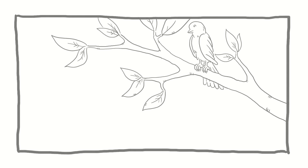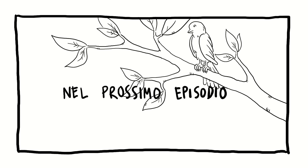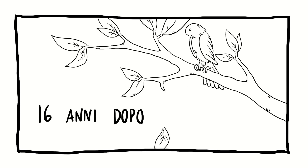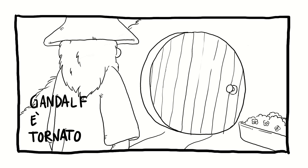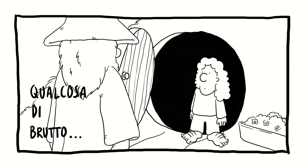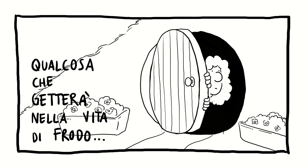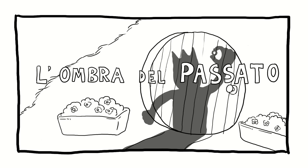Grazie per essere arrivato fin qui. Ed ora, come se fosse una serie tv, arriva nel prossimo capitolo. Perché ogni capitolo è pensato come se fosse una puntata di una serie tv: un libro è tipo una stagione. Questo è il trailer del prossimo capitolo. 16 anni dopo. Gandalf è tornato e ha scoperto qualcosa - qualcosa di brutto, di reale - qualcosa che getterà un'ombra sulla vita di Frodo. L'ombra del passato, che è il titolo del prossimo capitolo.